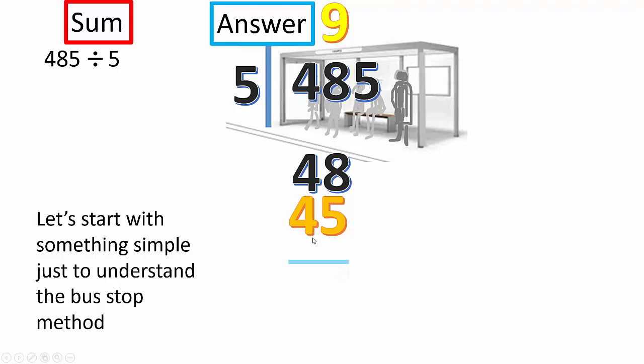So, now, let's take the 5 from the 8. We get 3. If we take 4 from 4, we get nothing. Bring down the last 5. 5 into 35 goes 7. 7 times 5 equals 35.